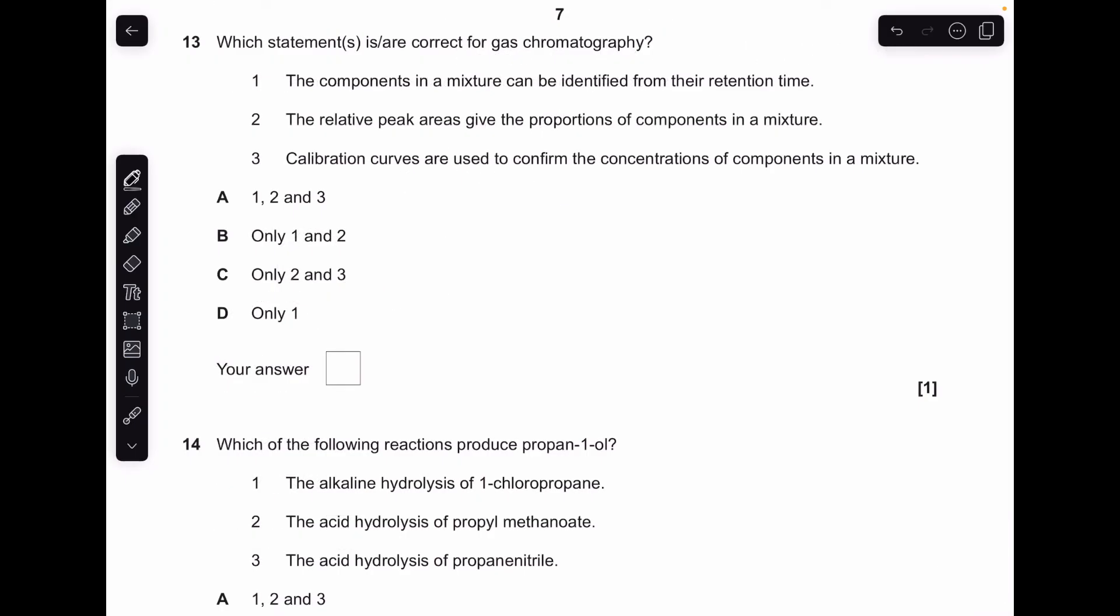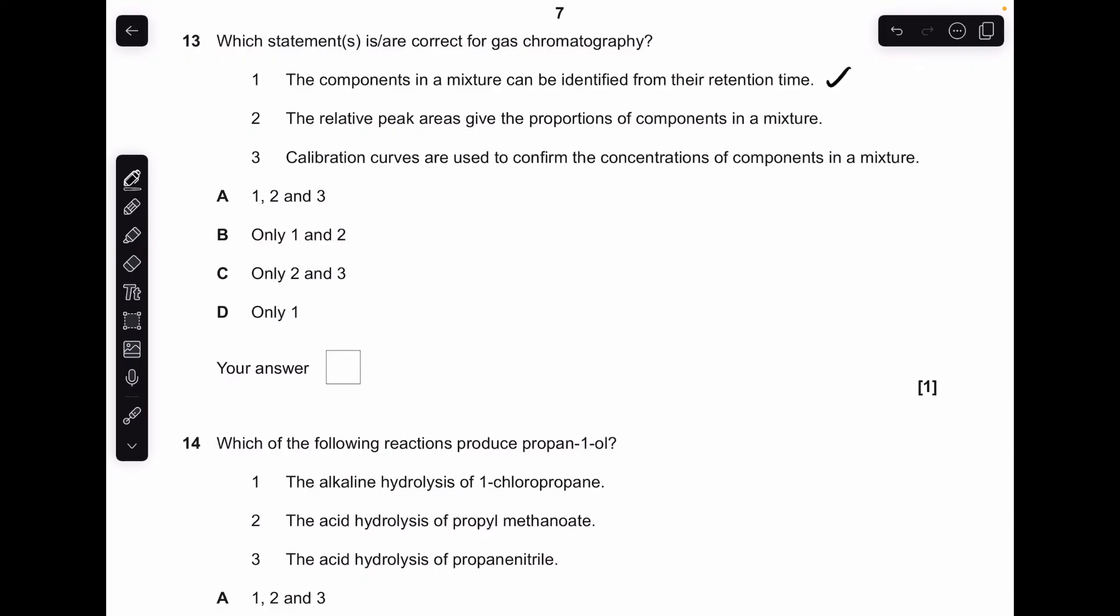Question 13, which of these statements are correct for gas chromatography? Components in the mixture can be identified from retention time. Yep, that's right. Relative peak area gives the proportions of the components in the mixture. That's right. Calibration curves are used to confirm concentrations of components. That's also correct. So all three right. A is the answer.